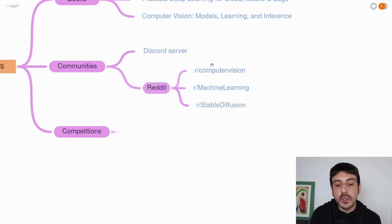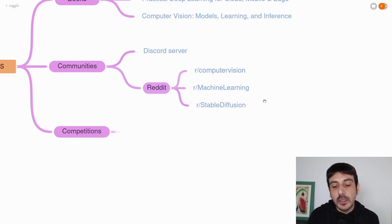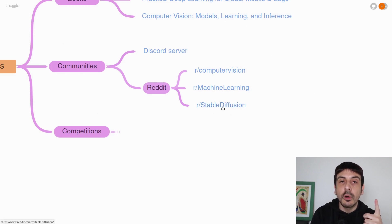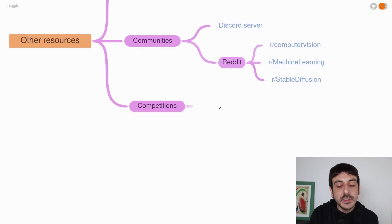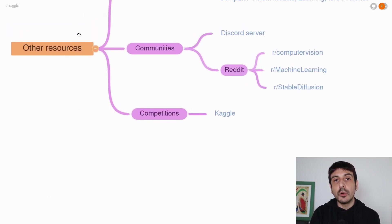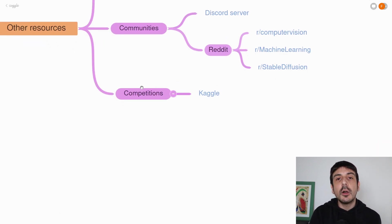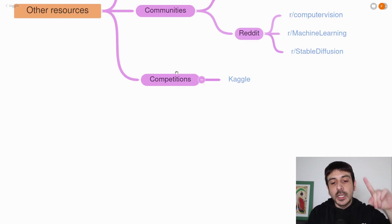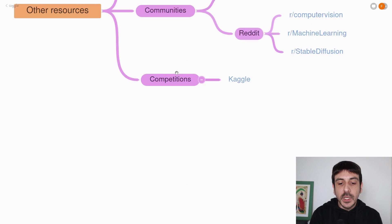You also have subreddits you could consider, like the computer vision and machine learning subreddits. These are high-level subreddits, but you also have many other subreddits which are very valuable for learning about a very specific niche — for example, the stable diffusion subreddit, which is perhaps one of the most valuable resources to learn stable diffusion. Then another very interesting resource to go deeper into your computer vision knowledge is joining a competition and competing with other people — that's going to take your skill set a step further for sure. I recommend using Kaggle, which is perhaps the most important and relevant site for competitive computer vision, where you train a model and compete against other competitors.